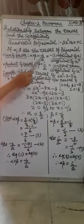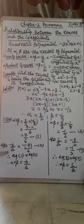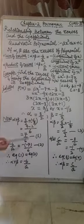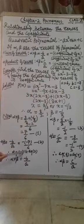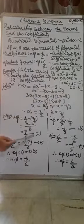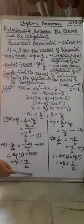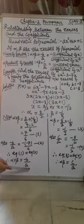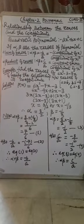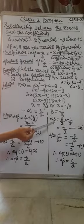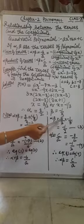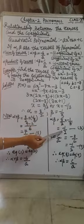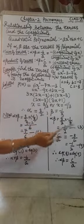This should equal minus b upon a. Separately, we calculate minus b upon a: b is minus 7 and a is 6, so minus b upon a equals 7 upon 6. Comparing, the sum of the zeros equals minus b upon a — this relation is verified. Now for the product: alpha into beta equals 3 upon 2 times minus 1 upon 3. The 3s cancel, giving minus 1 upon 2. We name this equation 3.